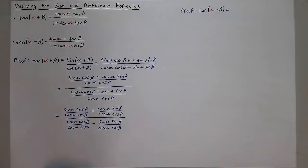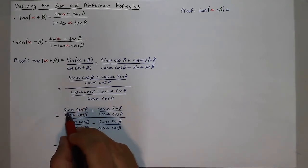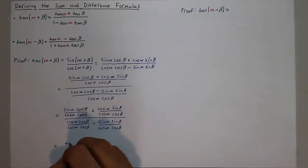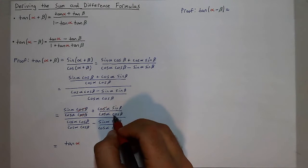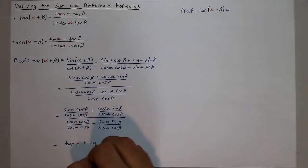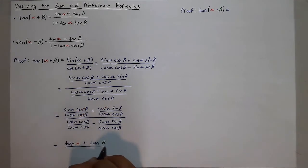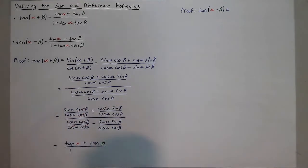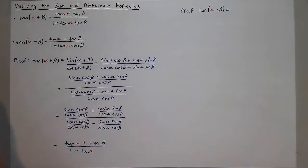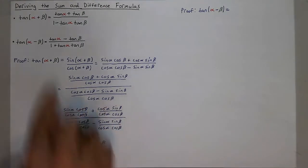As I simplify, the cosines cancel out. The first numerator term gives sine alpha over cosine alpha, which is tangent of alpha. The second numerator term, with the cosine alphas canceling, gives sine beta over cosine beta, which is tangent of beta. In the denominator, all cosine alphas and cosine betas cancel to give 1, minus sine alpha over cosine alpha times sine beta over cosine beta, which is tangent alpha times tangent beta. So tangent of alpha plus beta equals tangent alpha plus tangent beta, all over 1 minus tangent alpha tangent beta.